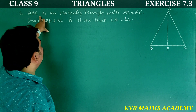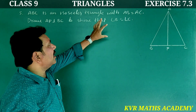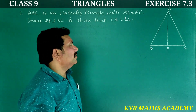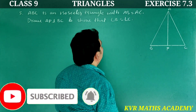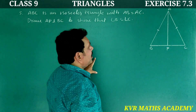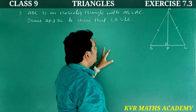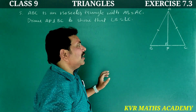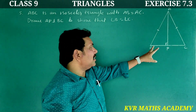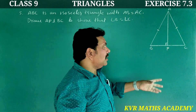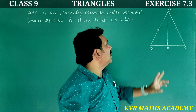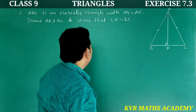Fifth problem: ABC is an isosceles triangle in which AB is equal to AC. AP is perpendicular to BC. Show that angle B is equal to angle C. In an isosceles triangle, the angles opposite to equal sides are equal, so we convert this — draw AP perpendicular to BC and prove angle B is equal to angle C.